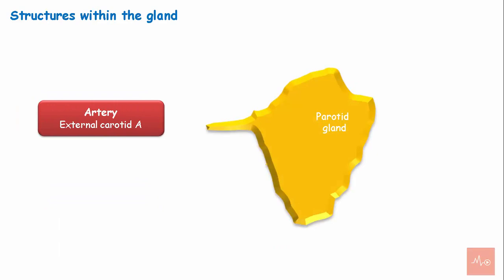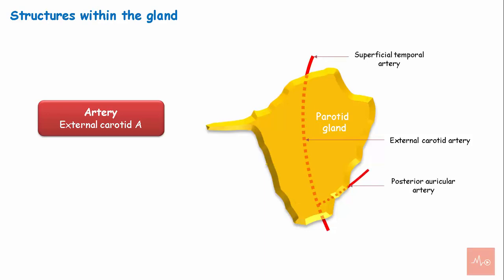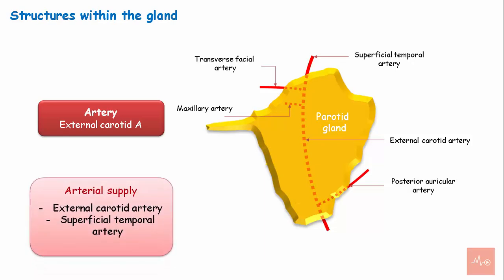The external carotid artery enters the gland by piercing the lower part of the posteromedial surface. It divides into the superficial temporal artery, posterior auricular artery, transverse facial artery, and the maxillary artery. Thus, the parotid gland is supplied by the external carotid artery and the superficial temporal artery.